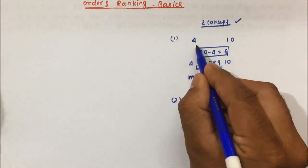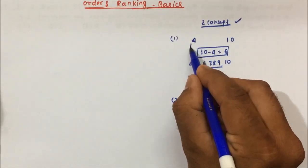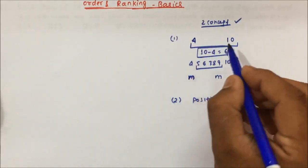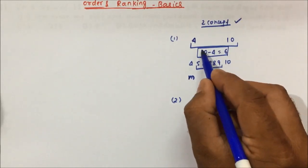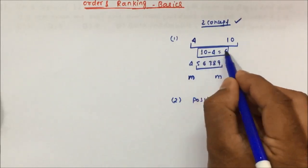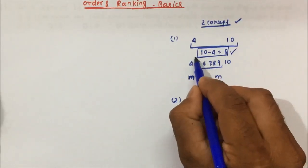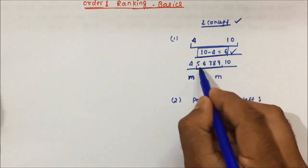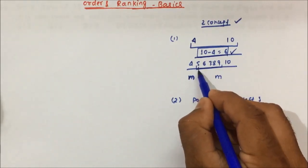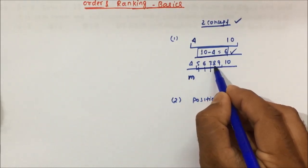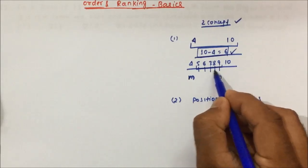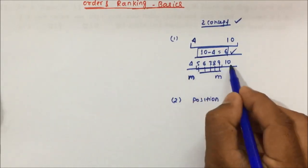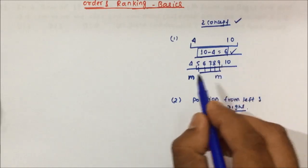So in the question, generally they will ask you how many numbers are in between 4 and 10. If anybody asks you how many numbers, then what will you do? 10 minus 4 equals 6. But this is wrong. In between 4 and 10, the numbers will be: 5, 6, 7, 8, 9 — so only 5 numbers will be there in between 4 and 10.